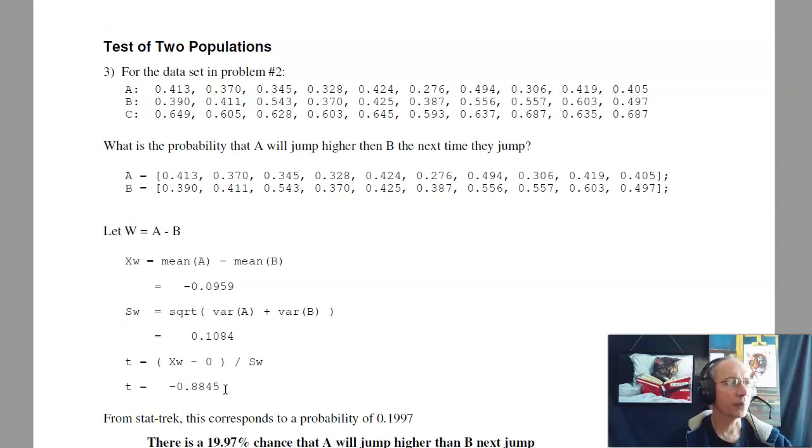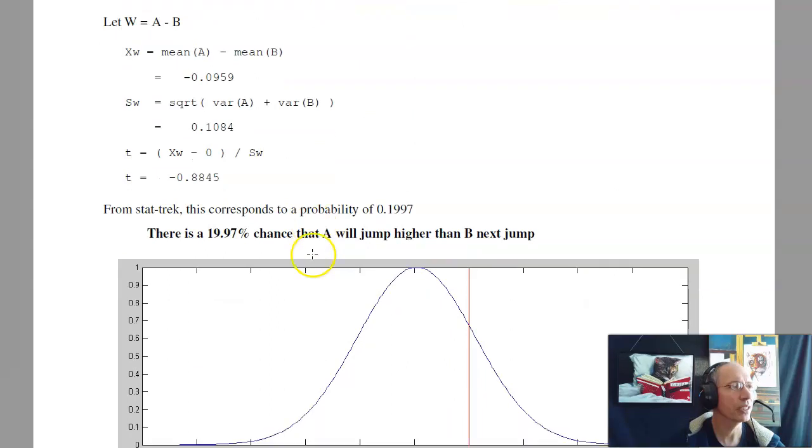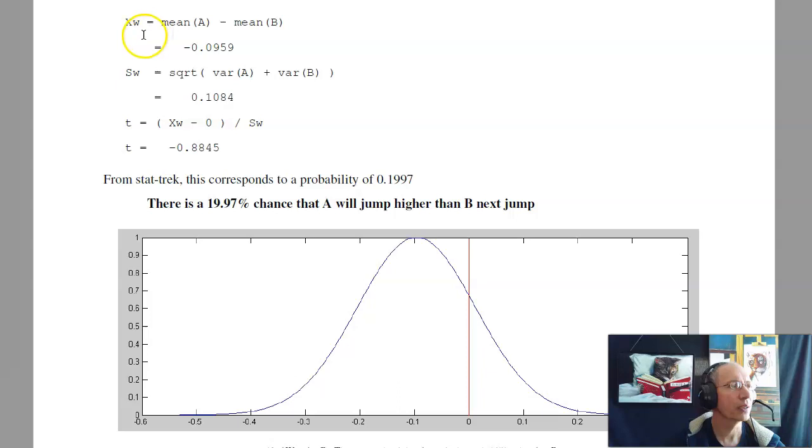Problem 3 is comparing two populations. I've got two people jumping, A and B. I want to find out what's the probability that A jumps higher than B. So here the trick is form a new variable, W. That's the difference between the two. The mean of W will be the mean of A minus the mean of B. It's negative, meaning B actually jumps higher than A. The standard deviation will be the root sum of squares, the variance of A plus the variance of B square root. Then the t-score is, here's the distribution of W. The t-score, the probability that A is bigger than B, is this area to the right of zero.